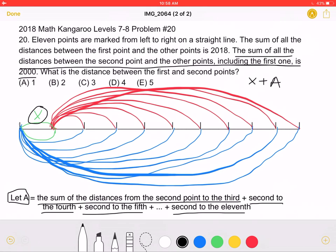So X plus this A, which I have drawn in red and already defined, must be equal to 2000.